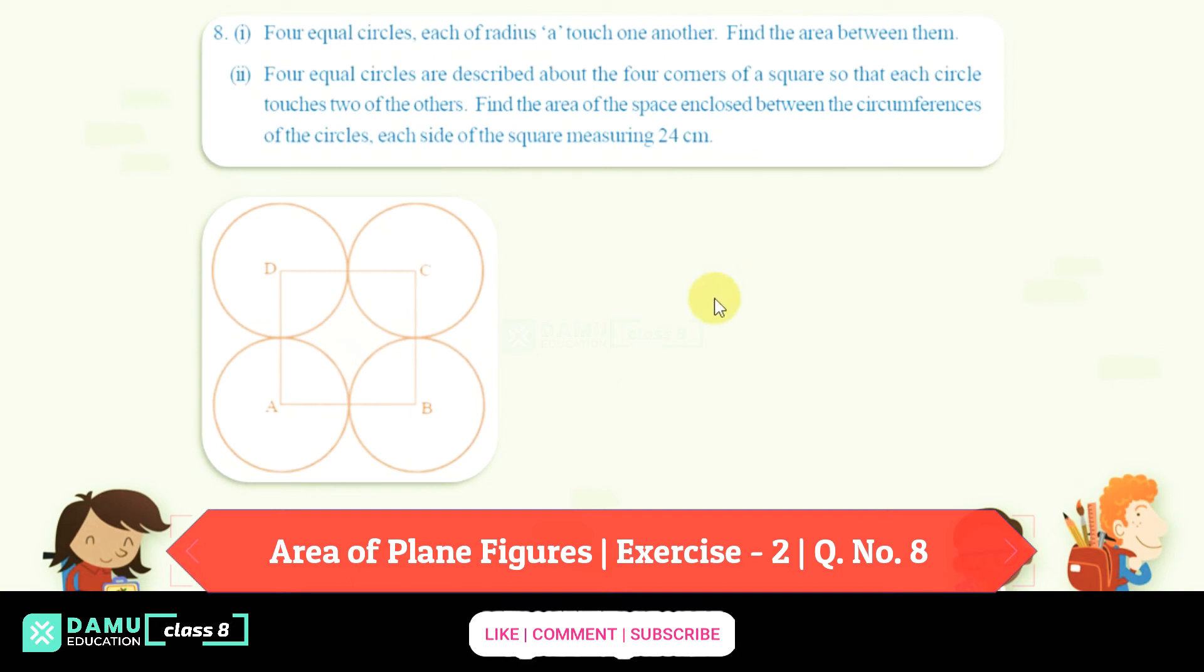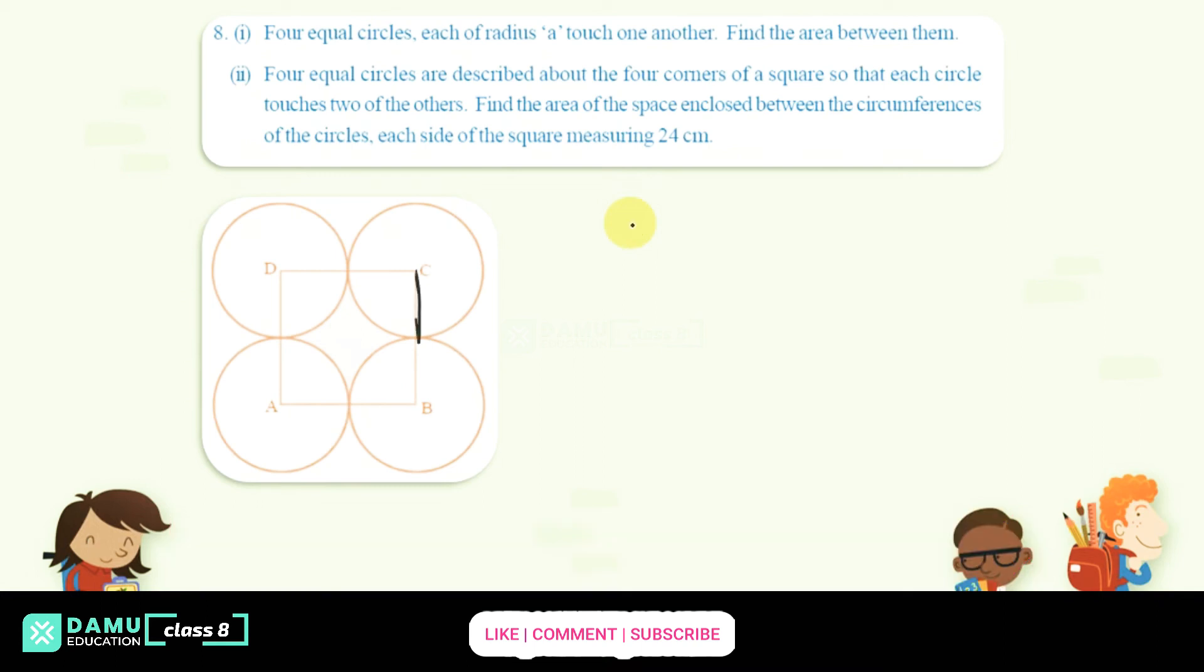So in this module, we are going to discuss question 8. Four equal circles, each of radius A, touch one another. So here, let's take this is A centimeter. Dimension radius will be equal to A. So here also, radius will be equal to A.